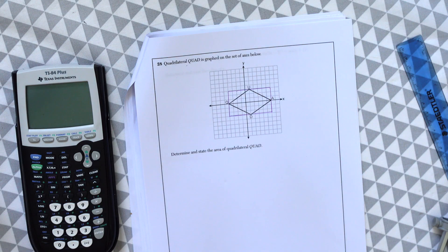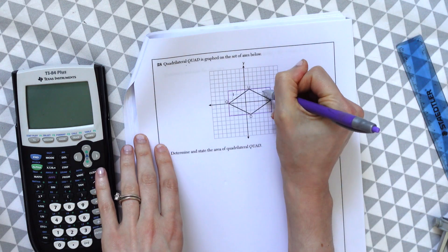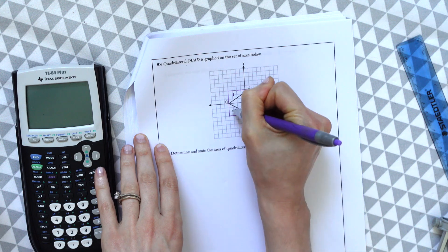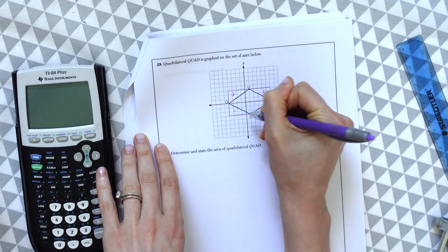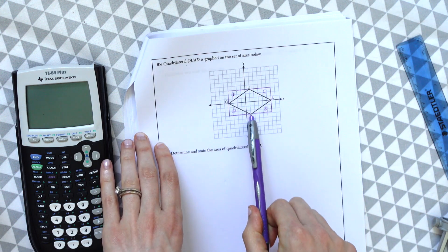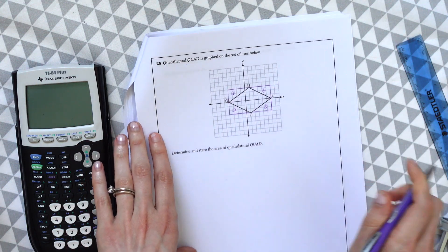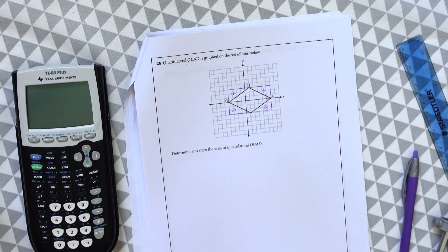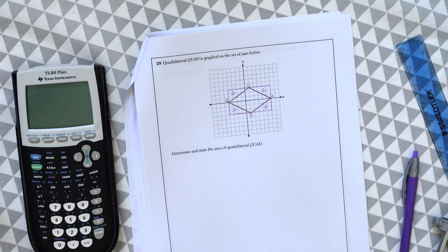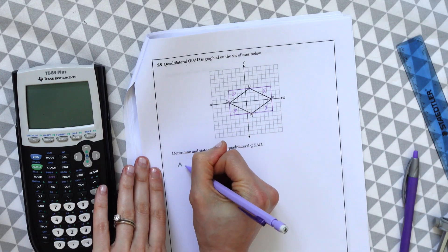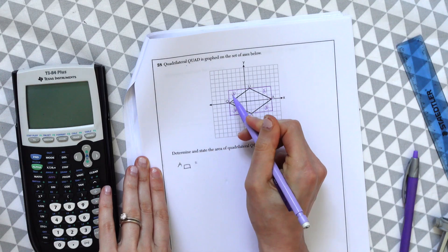So notice we kind of made these triangles go up surrounding the quadrilateral. So what we're going to do is find the area of each of these triangles. I'll label them one, two, three, four. We'll find the area of each of these and the area of the rectangle, then subtract out all the area of the triangles. If that doesn't make sense, we'll go through this one step at a time.